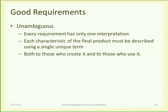Requirements should be unambiguous — there should be only one interpretation, not two ways of reading the same requirement. Keep the prose very simple, use very short and simple sentences. Always use the same words for the same concept: don't use synonyms like 'user', 'customer', and 'client' for the same person, or 'phone', 'smartphone', and 'device' for the same object. Use consistent terminology to minimize ambiguity.